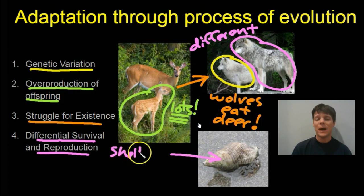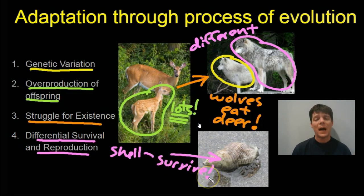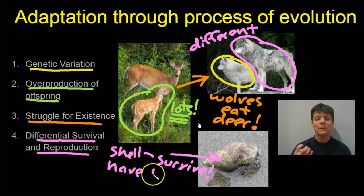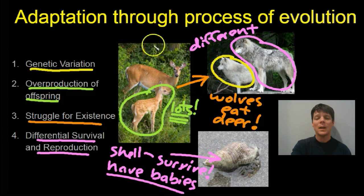Finally, we have differential survival and reproduction. We see here a hermit crab that has a protective shell. When organisms have structures which allow them to better survive in their environment, they're going to be more likely to reproduce — you can't reproduce if you're dead. So the crabs that have the best protective shells are going to do the best job surviving, and they're going to have more babies.